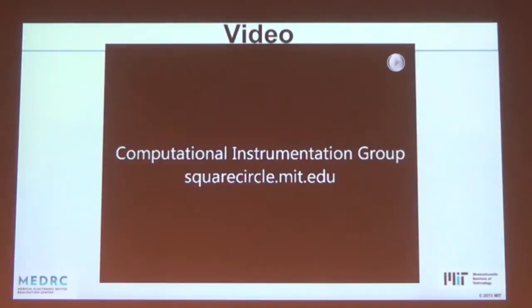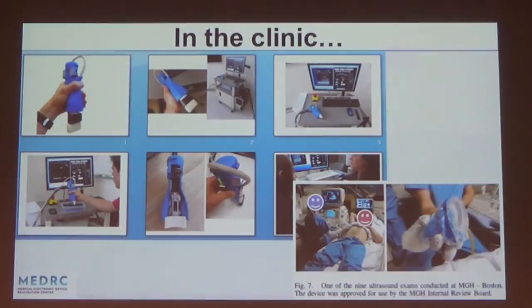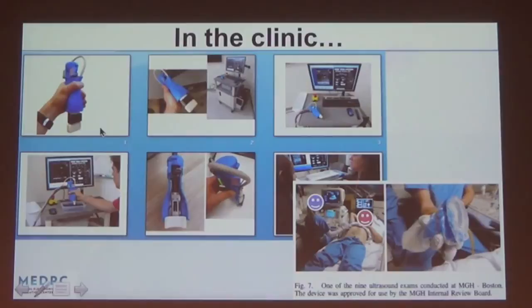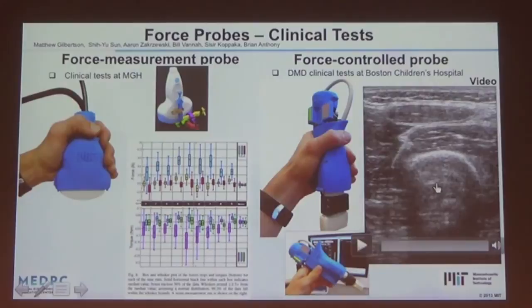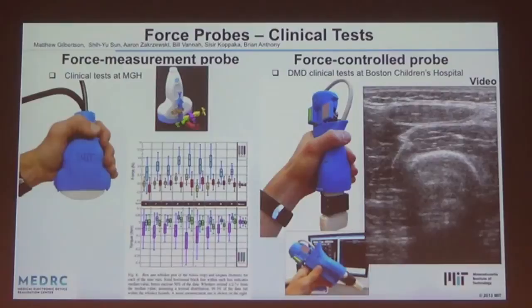How are we using this clinically? With Children's Hospital, we're running a five-year study on Duchenne muscular dystrophy — tracking patients to classify Duchenne versus non-Duchenne and to quantitatively track the progression of DMD. This is the second generation probe at Children's Hospital. On a number of muscles — bicep, tricep, gastroc — we do an angle sweep and a controlled force sweep, then look at metrics that are both physics-based and computer-vision-based extractions from the imagery.